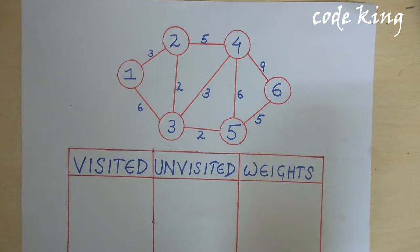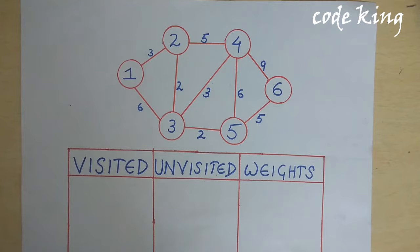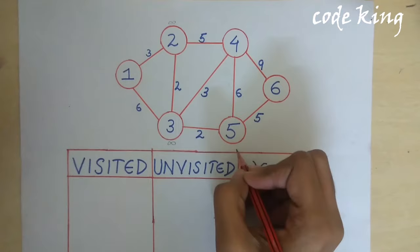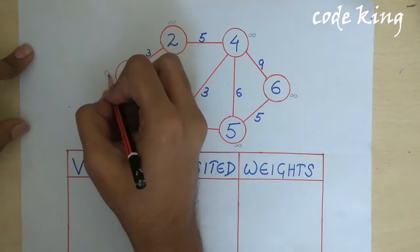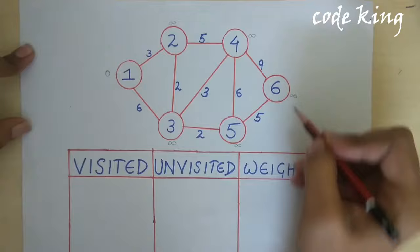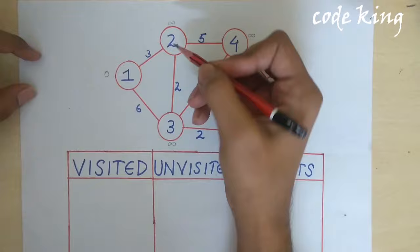We can solve Dijkstra's algorithm in both directed and undirected graphs, but here we are taking an undirected graph. We are assuming all the weights to be infinity and the source node to be node 0. The weight of the source node is 0 and all the other nodes are infinity. The weight represents the distance from the source node, and the edge weight is given.